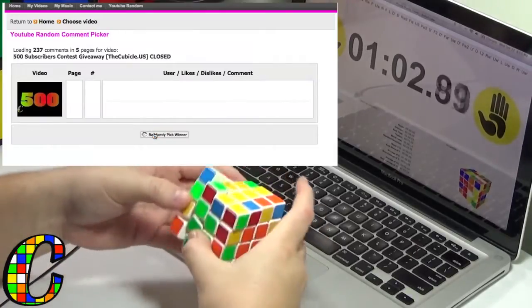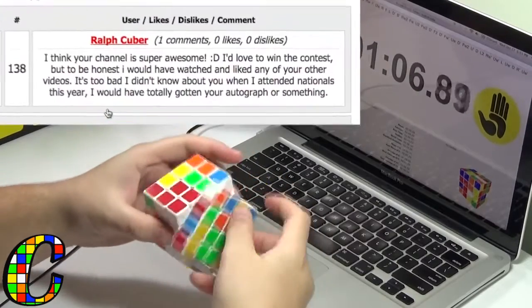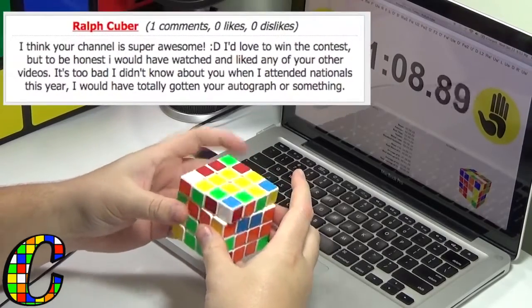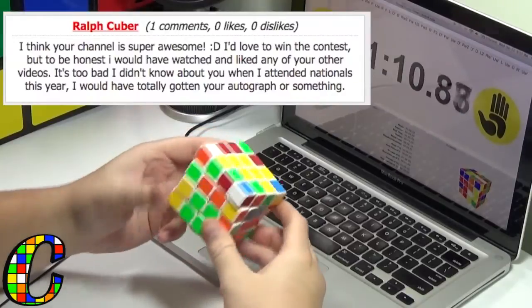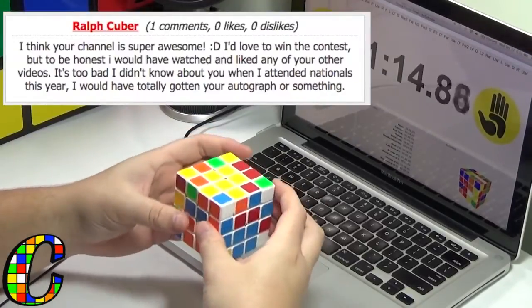We see the winner is Ralph Kuber. He got the first place position and he said, 'I think your channel is super awesome, I'd love to win the contest but to be honest I would have watched and liked any of your other videos. It's too bad I didn't know about you when I attended nationals this year, I would've totally gotten your autograph or something.'